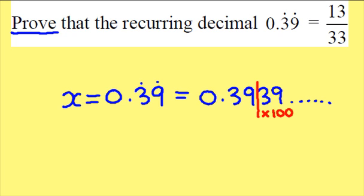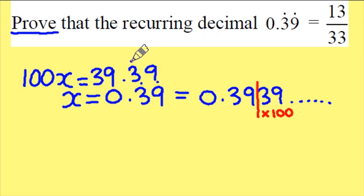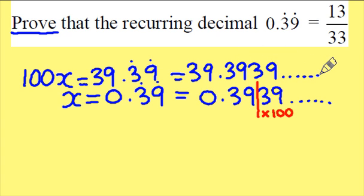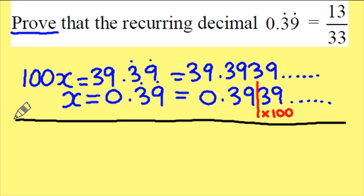Multiplying the entire top line by 100 gives me 100x's which is equal to 39.39 recurring and again 39.3939 going on to infinity. Once again the layout is paramount, the digits must line up and subtracting the 9's will vanish as will the 3's when I subtract.